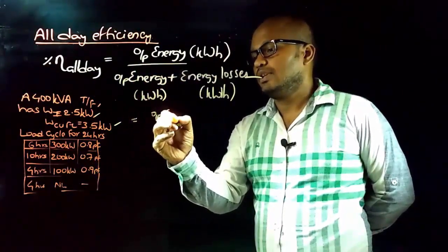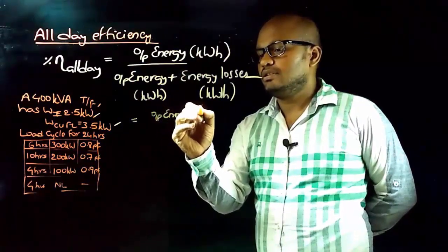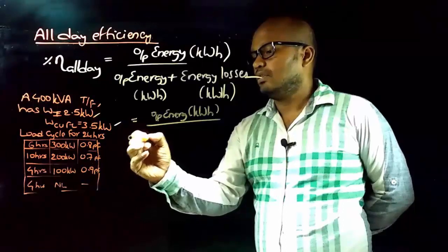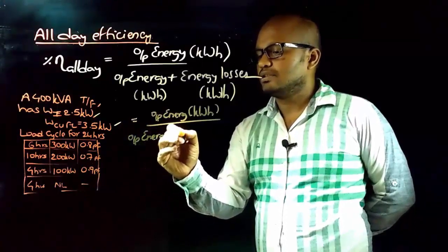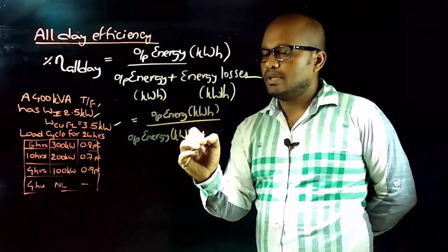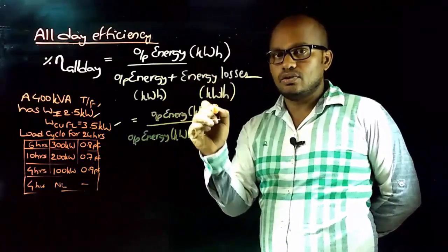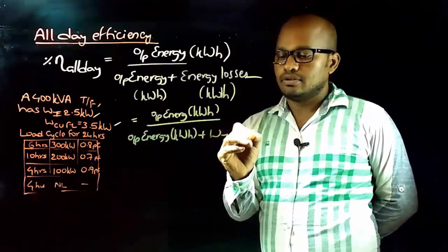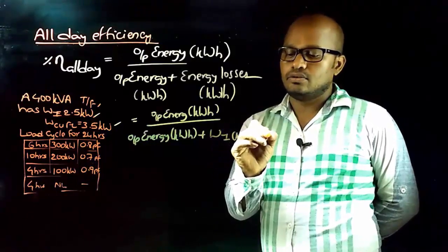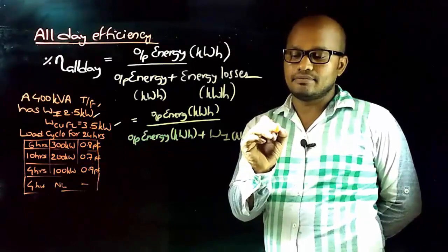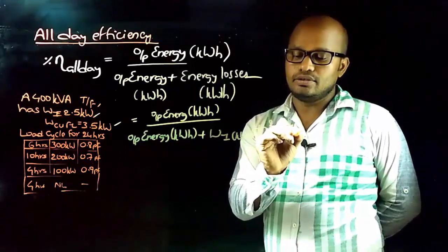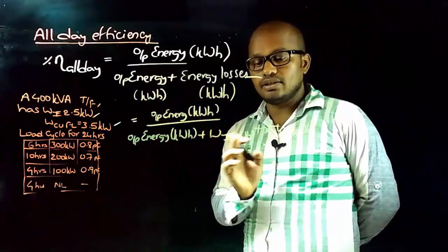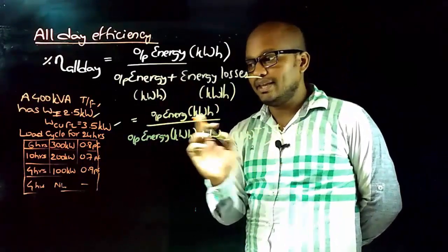The formula is: output energy in kWh divided by output energy in kWh plus energy losses, where energy losses include iron losses and copper losses. Copper losses are equal to x² times Wcu in kilowatt-hours. We first need to find x because it is not directly given.